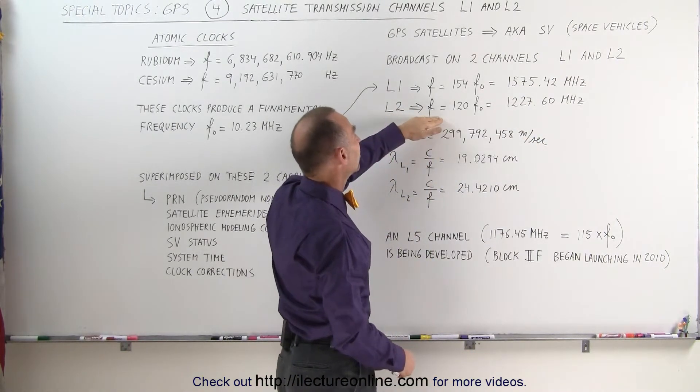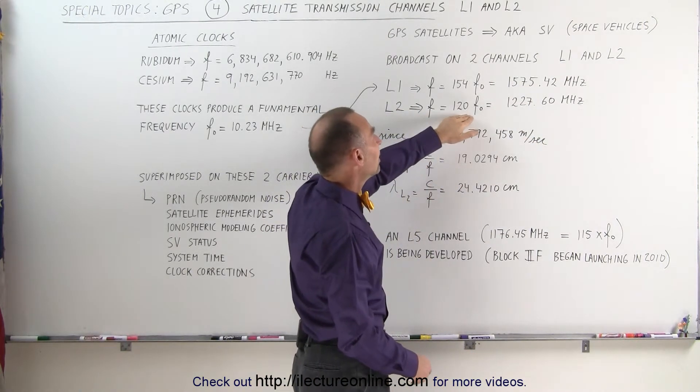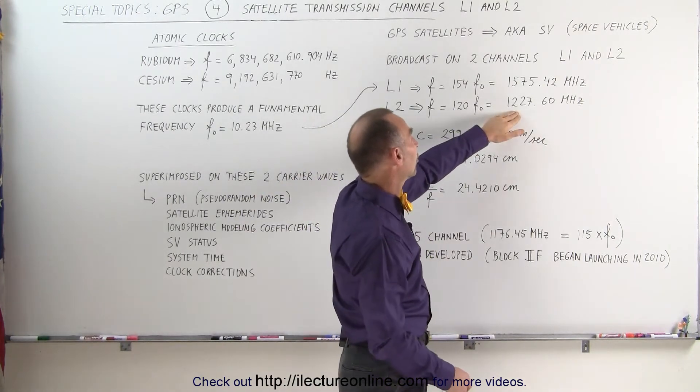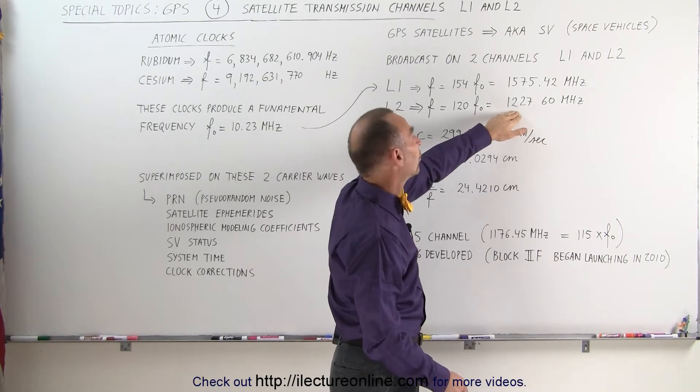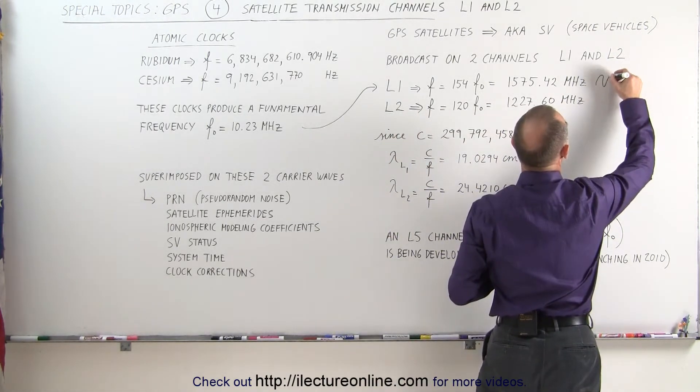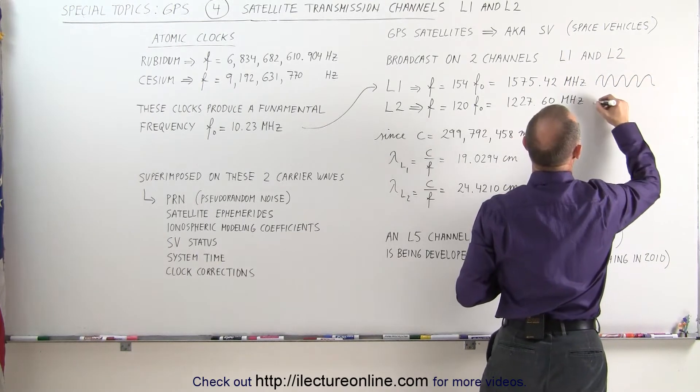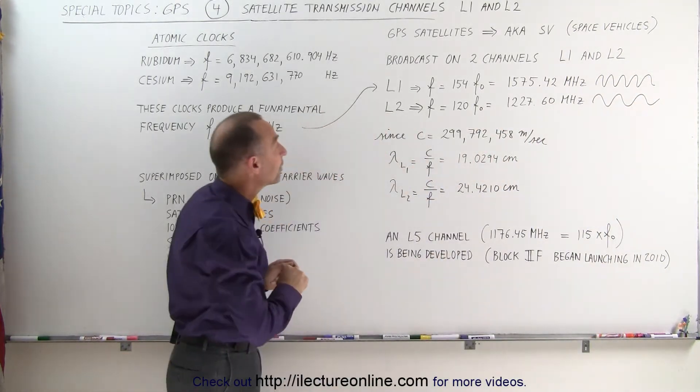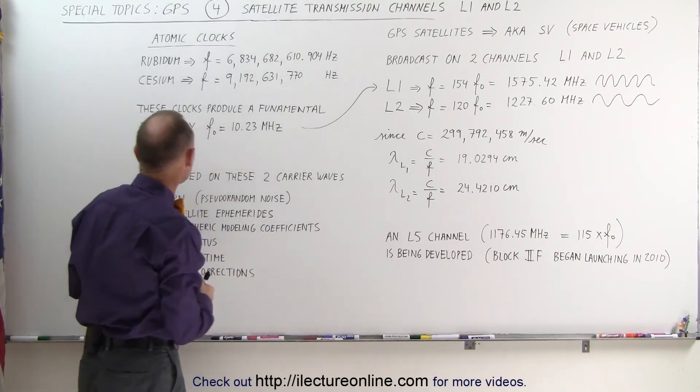On L2, we have a carrier frequency which is 120 times the base or fundamental frequency, and that produces a signal at 1227.60 megahertz. So we have these two carrier frequencies, one that has a much higher frequency, one that has a slightly lower frequency. On those two carrier frequencies, we then load all the other information.